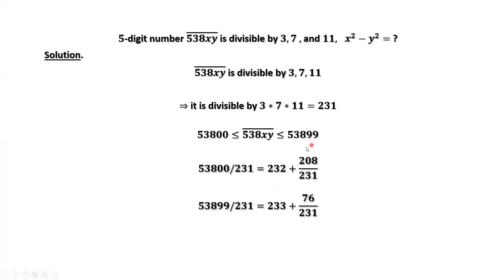The upper bound divided by this factor, 231, equals 233 plus 76 over 231. 76 is the remainder.